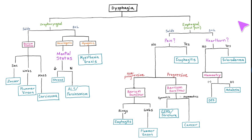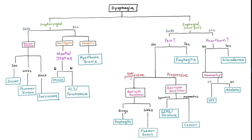If they mention associated chest pain, think esophageal. The patient will also mention whether they have difficulty swallowing solids only or both solids and liquids. For oropharyngeal dysphagia with trouble swallowing solids, we suspect obstruction, so a barium swallow will allow us to distinguish between a Zenker diverticulum, where we see an outpouching where food gets stuck causing halitosis or bad breath, Plummer-Vinson syndrome where we see upper esophageal webs, or a mass, which would be an asymmetrical stricture consistent with a carcinoma.